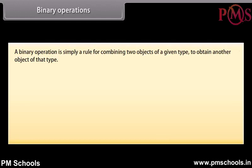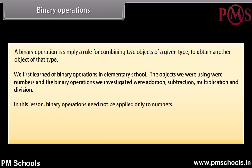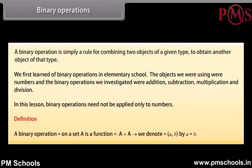Binary operations: A binary operation is simply a rule for combining two objects of a given type to obtain another object of that type. We first learned of binary operations in elementary school — the objects were numbers and the binary operations were addition, subtraction, multiplication, and division. In this lesson, binary operations need not be applied only to numbers. A binary operation ★ on a set A is a function ★ from A×A to A; we denote ★(a, b) by a★b.